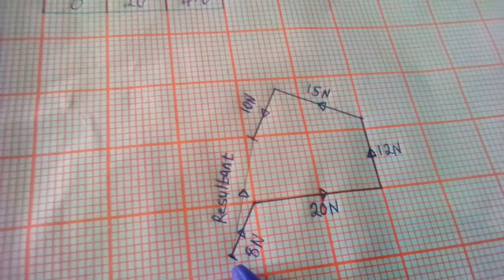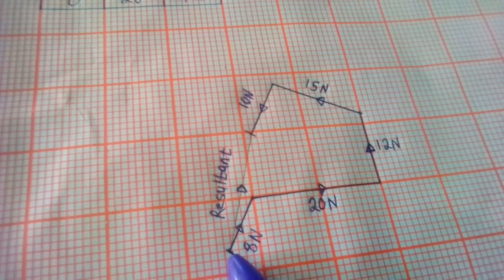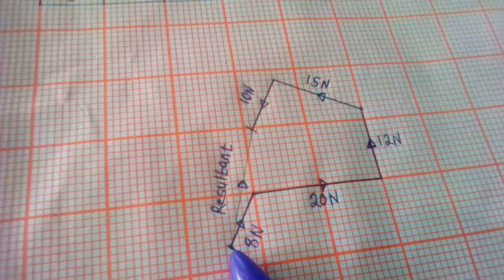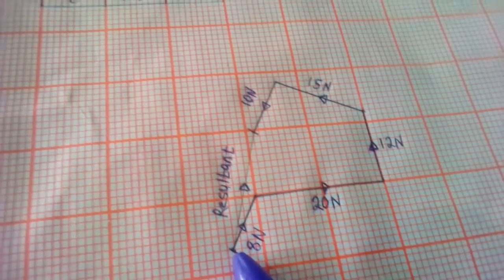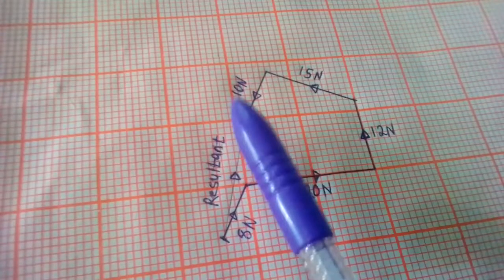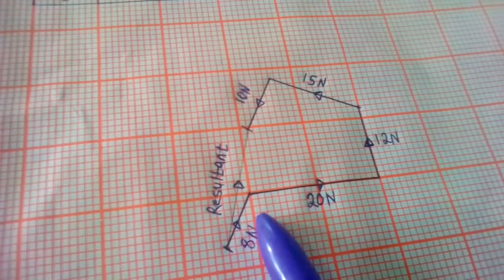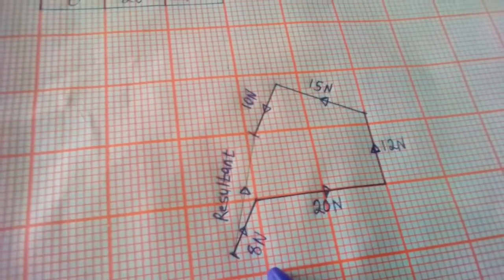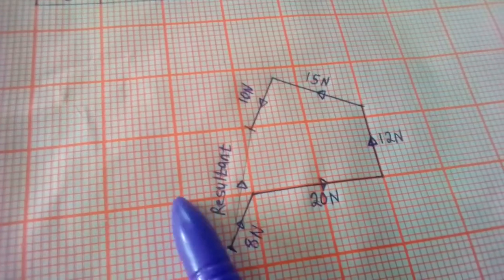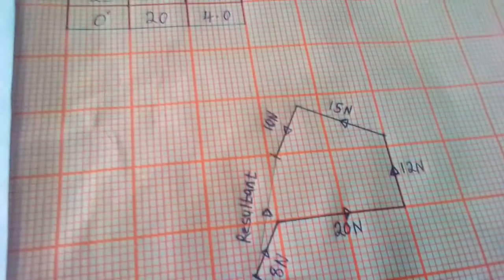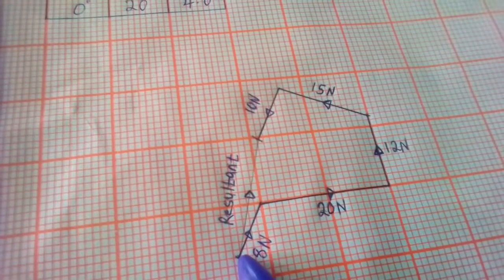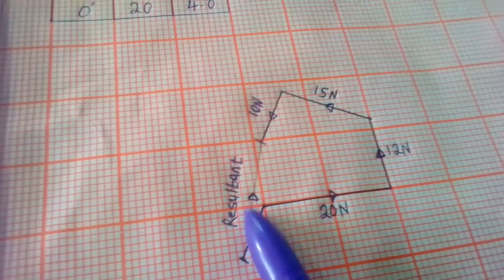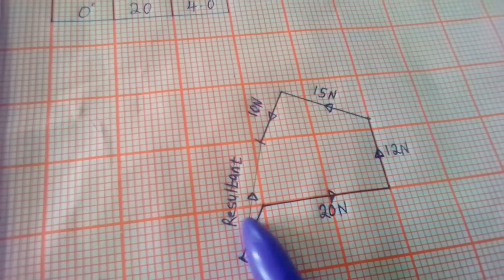From here to here is 1.6 cm at an angle of 60 degrees. You also turn your protractor upside down and measure 60 degrees from the horizontal line here. That is how we obtain 60 degrees in this format.